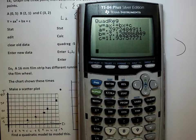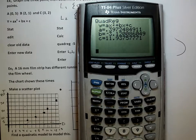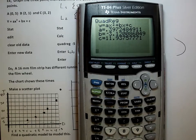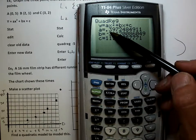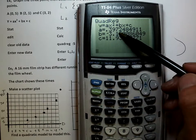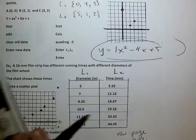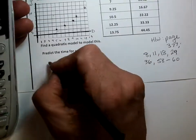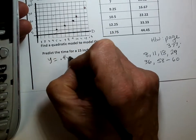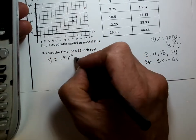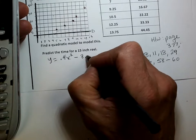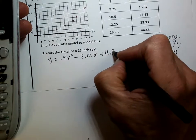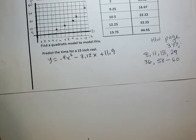We'll go back to these directions. We're going to go to stat. Calculate, quadreg. L1, comma, L2, enter. So there's my answer. I'm going to have to do a little bit of rounding because of decimals. And I always say with rounding, just use a little common sense. That's pretty close to 0.4, so I'll just round it to 0.4. I'm going to get 0.397, so why not 0.4? So I'm going to say y equals 0.4x squared minus 3.12x plus 11.9. So that's my quadratic model.